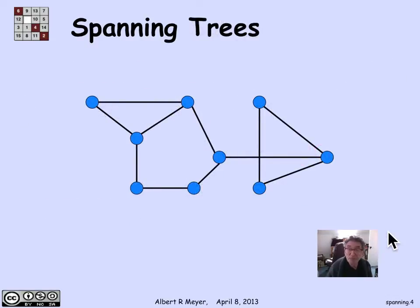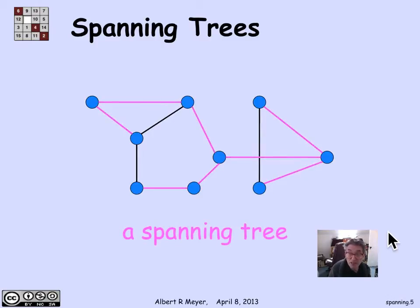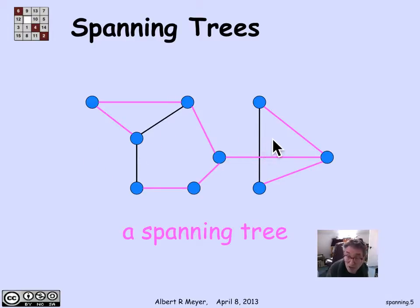Let's look at an example. Here's a simple graph. What I want is a spanning tree — a selection of edges that connect up all the vertices, using only edges in the original graph, such that they form a tree. If you check these magenta edges that I've highlighted, they define a tree. I haven't used three of the edges in the original graph.